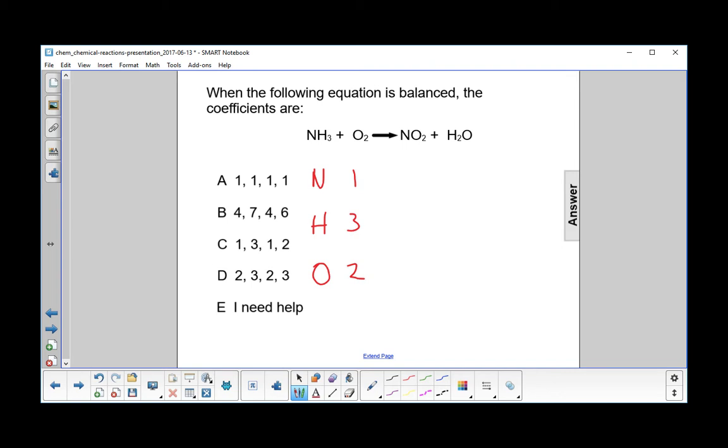On the product side, we have one nitrogen, two hydrogens, and three oxygens. This one is deceptively simple, but it's not going to work out that way. Let's start with hydrogen because it only shows up once on the right side.